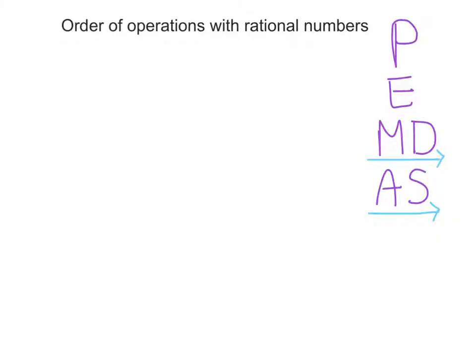So let's start by looking at an example problem. Let's say we have 2, and then in parentheses we have negative 7 plus negative .5, divided by 5. So if we're looking at this expression, we need to follow PEMDAS.